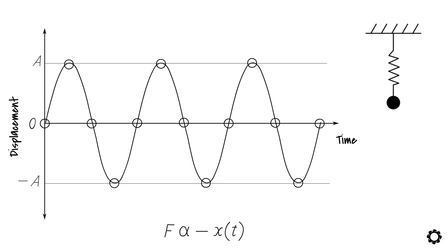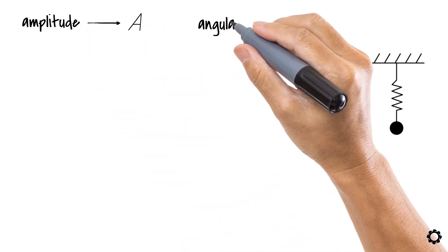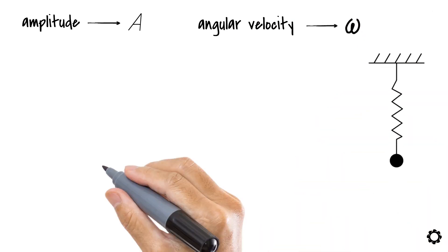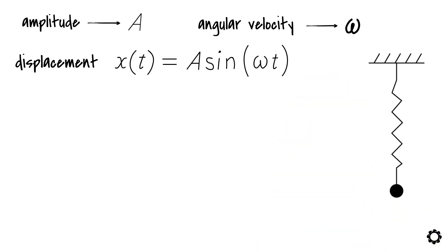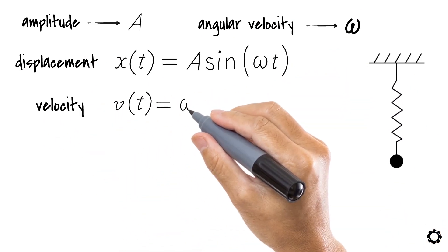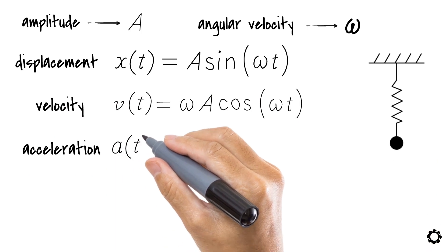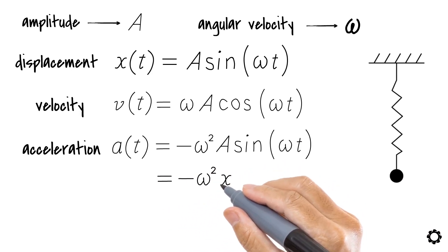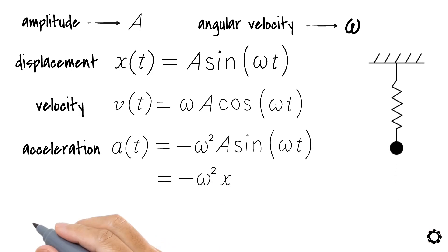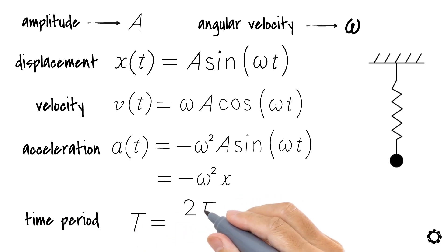Now we are equipped to form the equation for this motion. The amplitude of the oscillation is A. Considering the angular velocity of the mass to be omega, we can write the equation for displacement as x(t) equals A sine omega t. The first derivative of x(t) gives us the velocity: v(t) equals omega times A cosine omega t. The second derivative gives us the acceleration: a(t) equals minus omega squared times A sine omega t. Substituting A sine omega t as the displacement, this becomes equal to minus omega squared times x. From the angular velocity, we can also get the time period — the time taken by the mass to complete one full cycle — which equals 2 pi divided by omega.